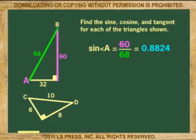Here we'll be rounding off to four decimal places. So the sine of angle A is 0.8824.